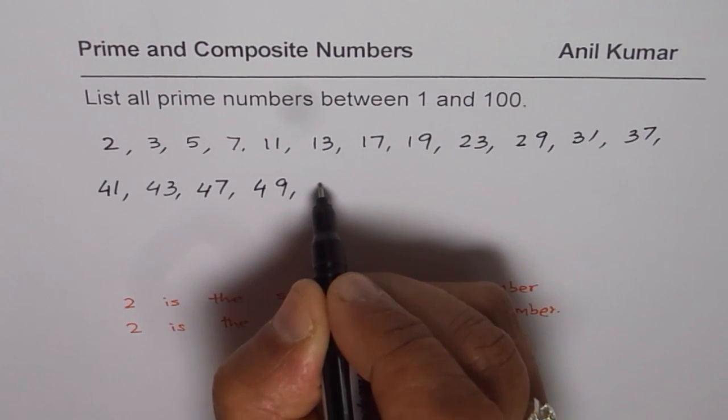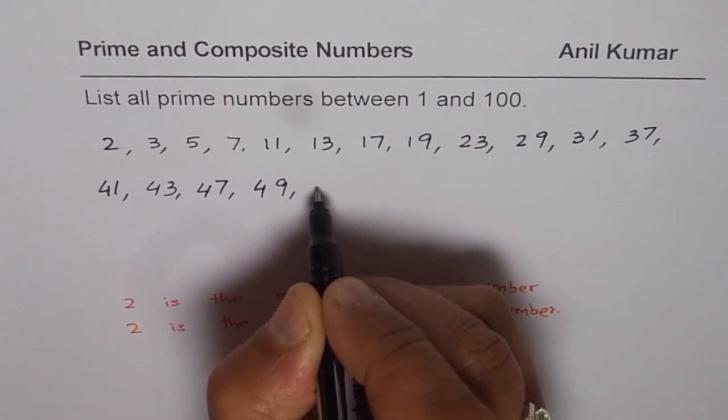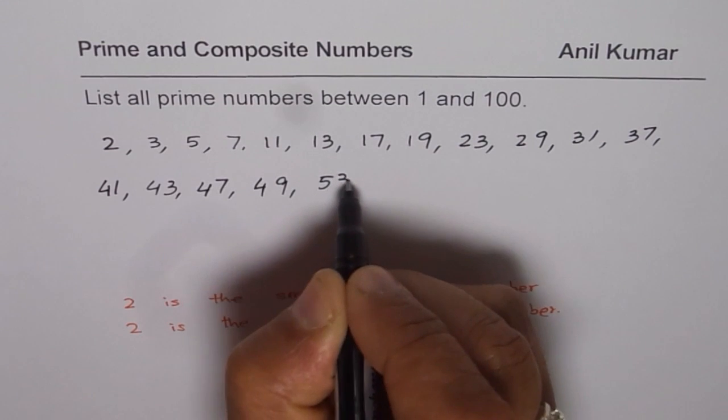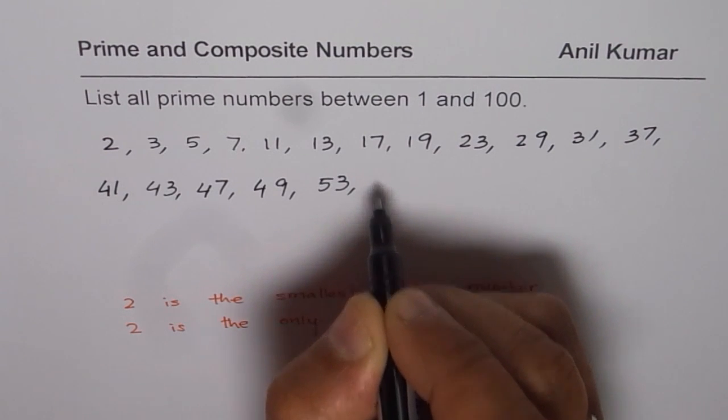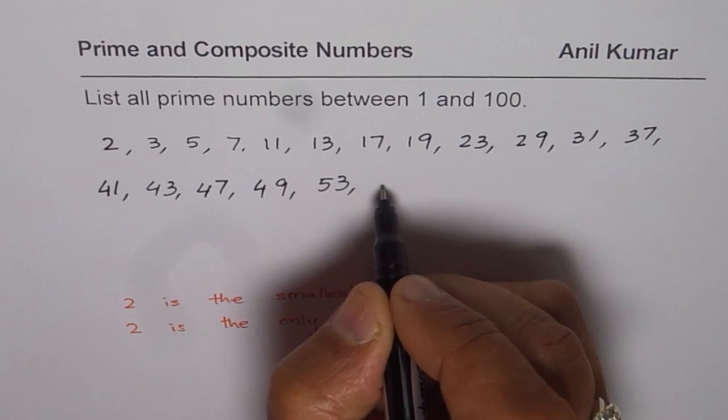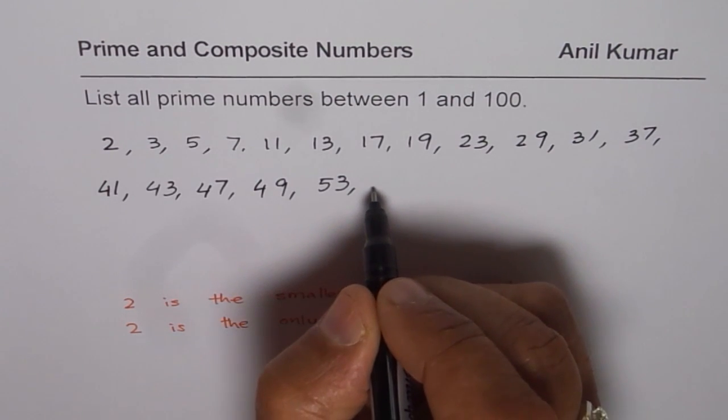50 is even. 51, 5 plus 1 is 6, that can be divided by 3, so 51 is not. 52 is not. 53 seems to be a prime number. 54 is even. 55 can be divided by 5. 56, 57 - 5 plus 7 is 12, so you can divide that by 3, so 57 is not prime.